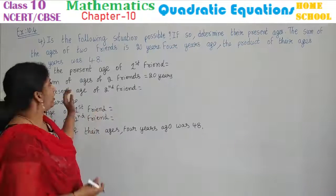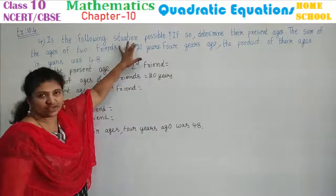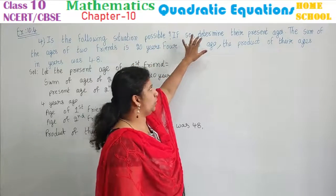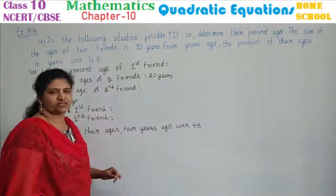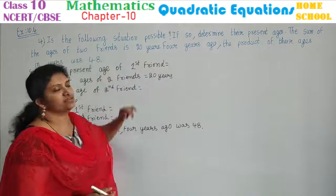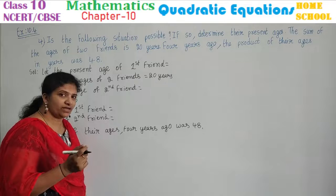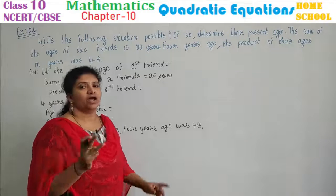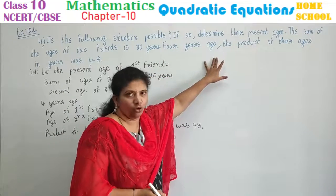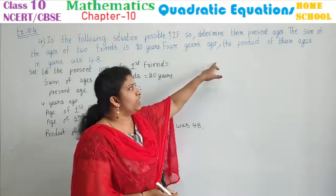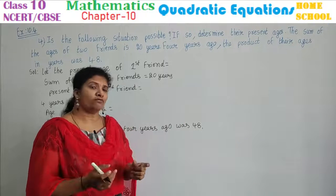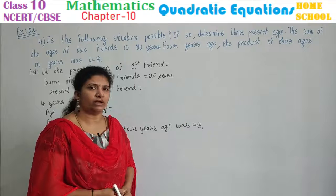Let's see the fourth problem. Is the following situation possible? If so, determine their present ages. The sum of the ages of two friends is 20 years. Four years ago, the product of their ages in years was 48.